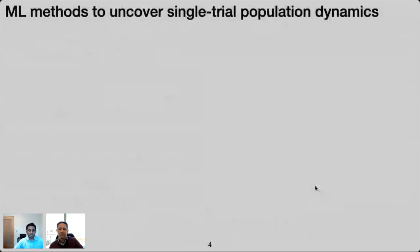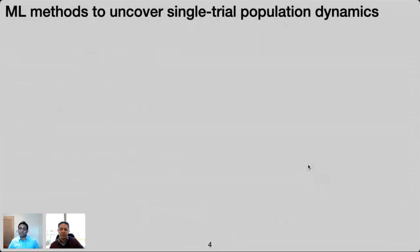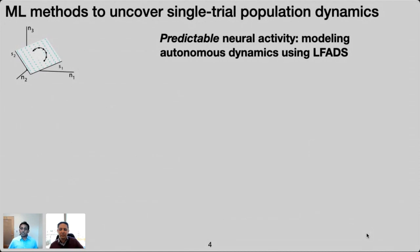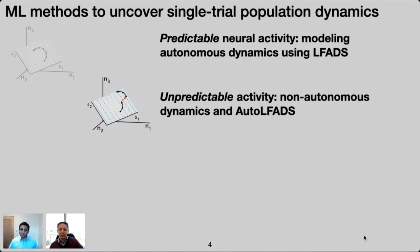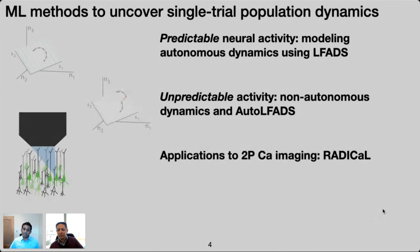Today I'll tell you about some work we've done to leverage machine learning for high-resolution, single-trial analyses of neural population dynamics. I'll tell you about a tool we developed known as latent factor analysis via dynamical systems, or LFADS, and show you how we first applied it to model population dynamics when neural activity is highly predictable. Then I'll show you how we generalized the method for cases where activity can be unpredictable, and also a recent tool we developed known as auto-LFADS. Next, I'll tell you about how we're enabling powerful new applications, here uncovering single-trial dynamics underlying two-photon calcium signals with an approach known as RADICAL. And finally, I'll tell you about how we're trying to coordinate and accelerate progress in the field more broadly by standardizing comparisons through a recent effort known as the Neural Latents Benchmark.